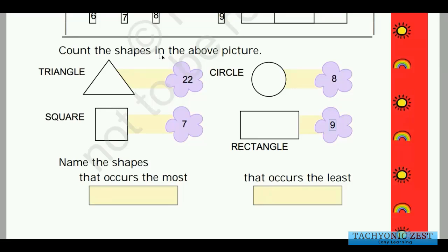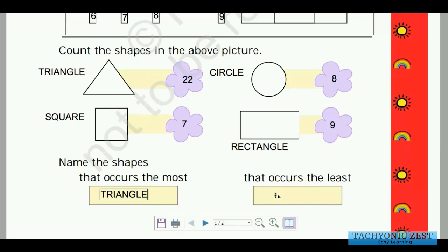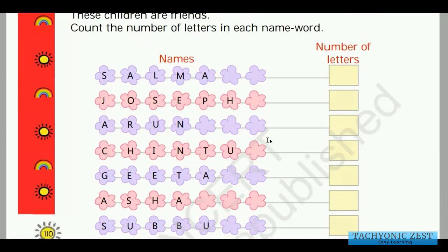Now the question asks: which shape occurs the most? Among all the shapes, the triangle has the highest count — 22 — so the answer is triangle. The shape that occurs the least is the square, with only 7, which is the lowest number among all four shapes, so we write square.